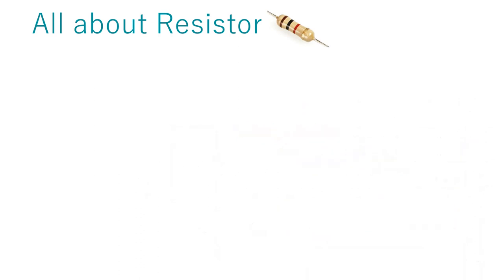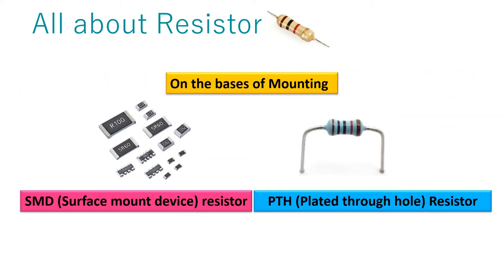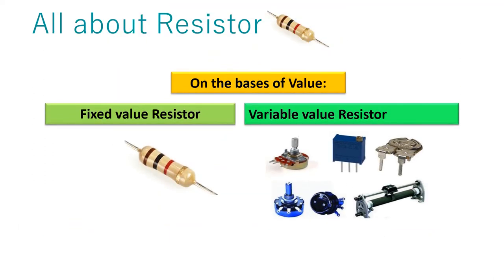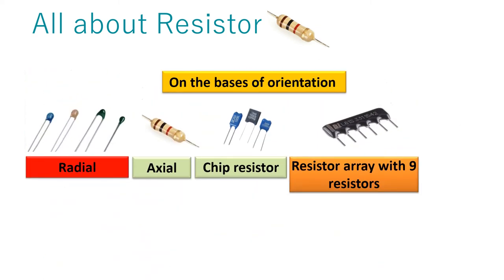The classification of resistors is done on many grounds. On the basis of mounting, resistors are of two types SMD and PTH. On the basis of value, fixed value and variable value resistor. On the basis of orientation, radial and axial resistor.